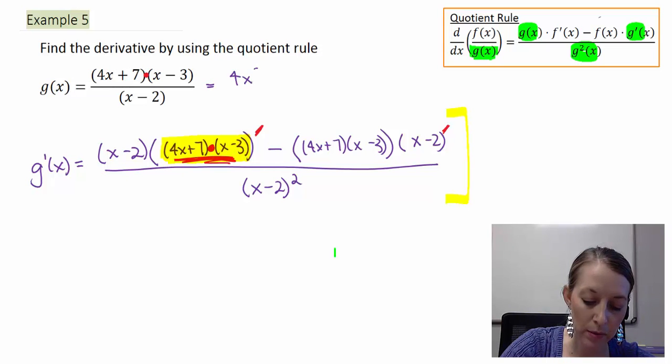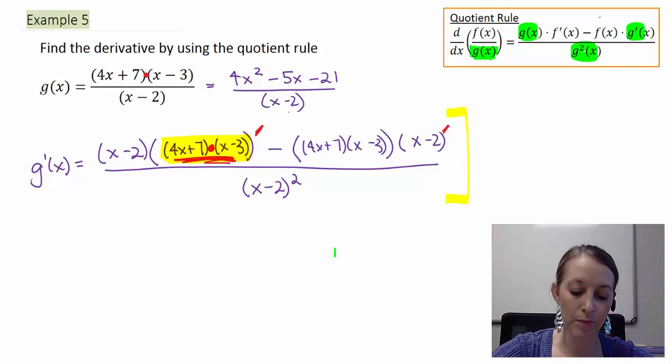4x times x gives me 4x squared. Outside gives me a negative 12x. Inside gives me a positive 7x. So together that gives me a negative 5x. And last gives me a negative 21. That is still all over my denominator.